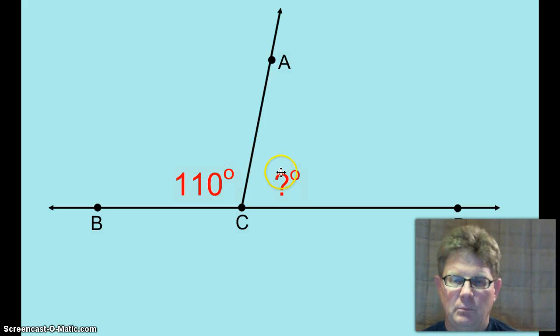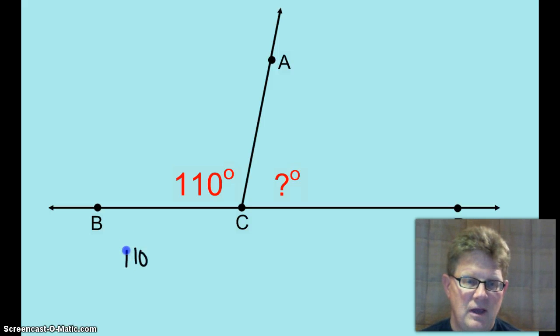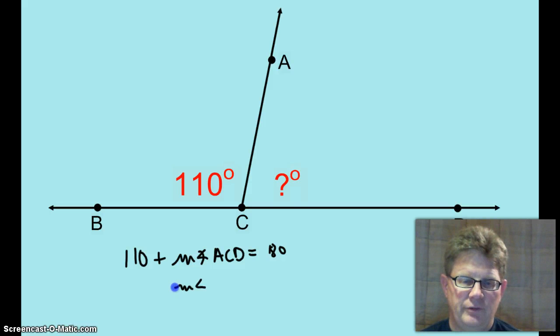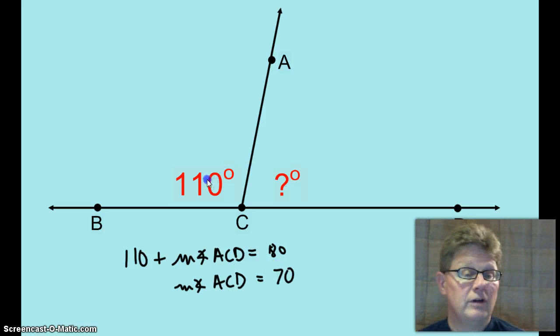It's a straight angle, so using the angle addition postulate, the first part plus the second part equals the whole thing. So your equation is 110 plus the measure of angle ACD equals 180. Subtract 110 from both sides and the measure of angle ACD is 70 degrees.